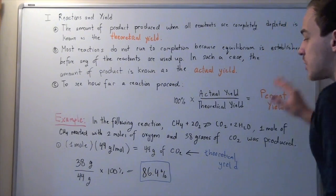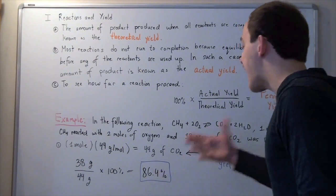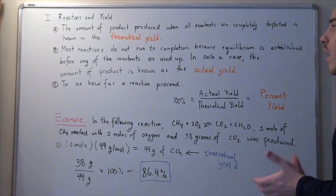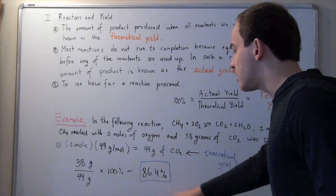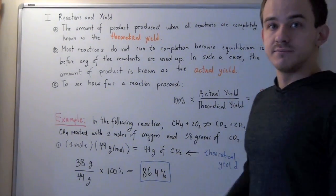In other words, this is a pretty good yield, because we see that our actual yield is not too far off from our theoretical yield. Anything 80% or above is considered to be a good yield.